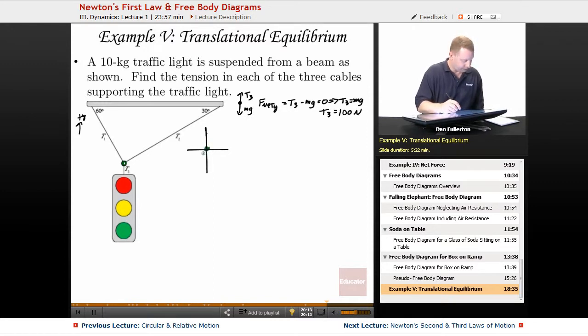There's our object. We have pulling on it T3 down, we have T2 to the right which is going to have an angle of 30 degrees, and we have T1 up and to the left at an angle of 60 degrees.